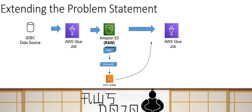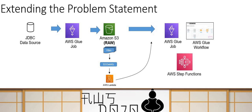Before moving to the solution, let's extend the problem. The same way three files raise S3 events and call a Lambda function — here you might not only trigger a Glue job, but also a Glue workflow or Step Function orchestrating your Glue jobs and crawlers. The solution I'm providing will work for this extended problem as well, where post-ingestion you can start a Glue workflow, a Step Function, or a Glue job depending on how your pipeline is built.